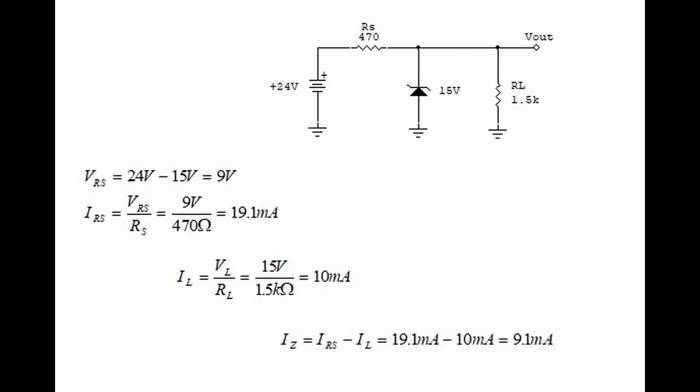Finally, we can find the current through the zener diode: it is the total current of 19.1 milliamps minus the current through the load of 10 milliamps. So the current through the zener diode is 9.1 milliamps, and as we said before, we must always know the current through the zener diode.